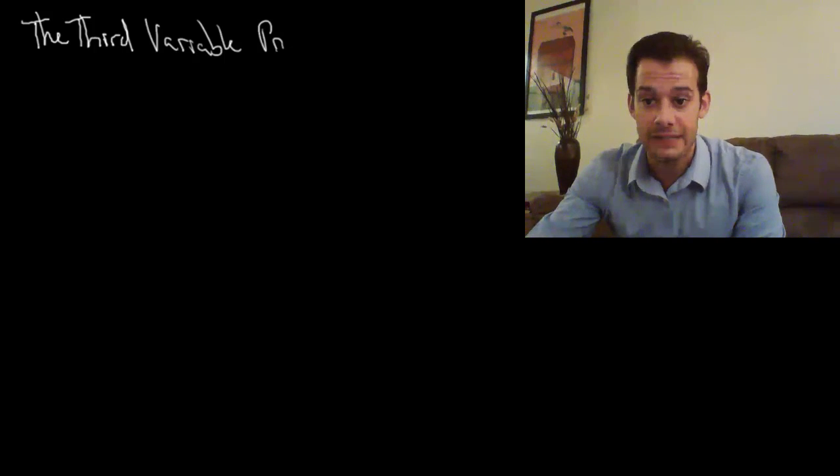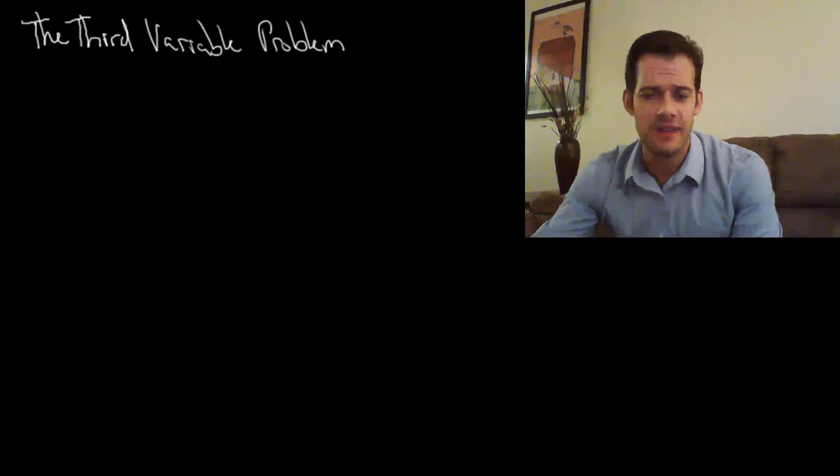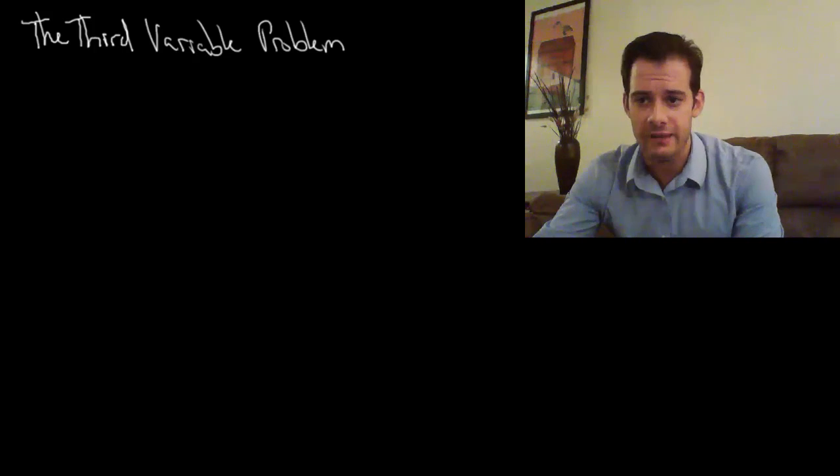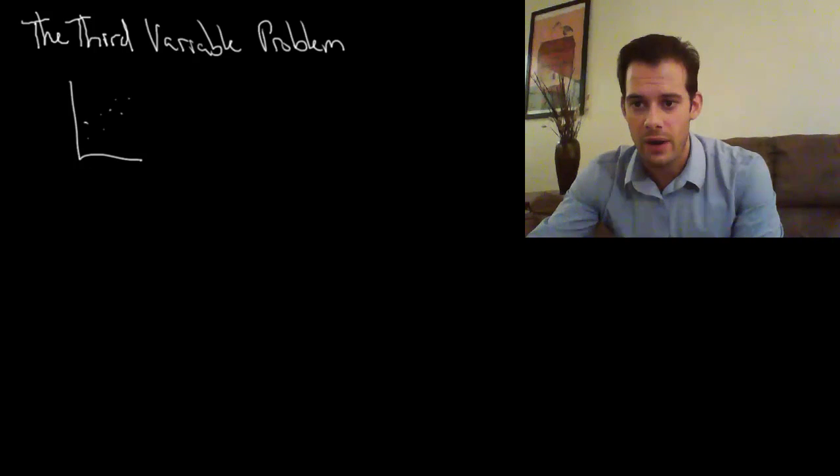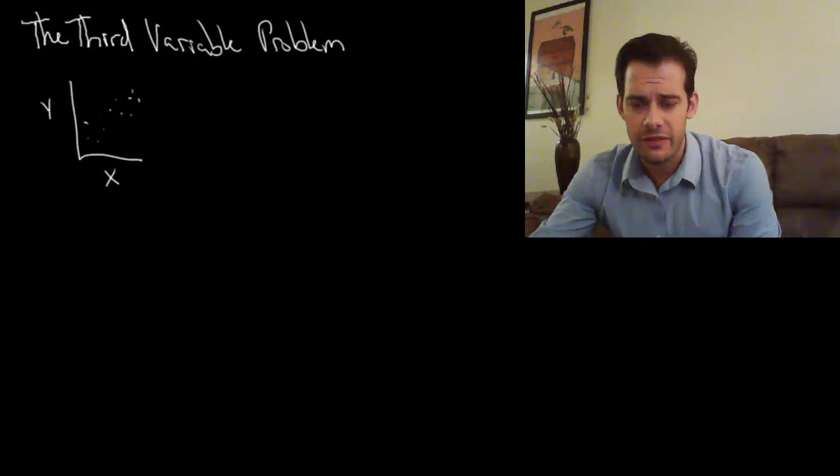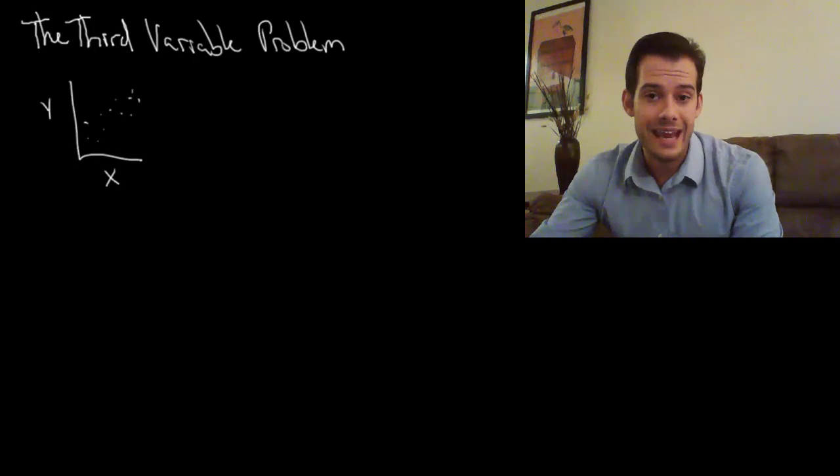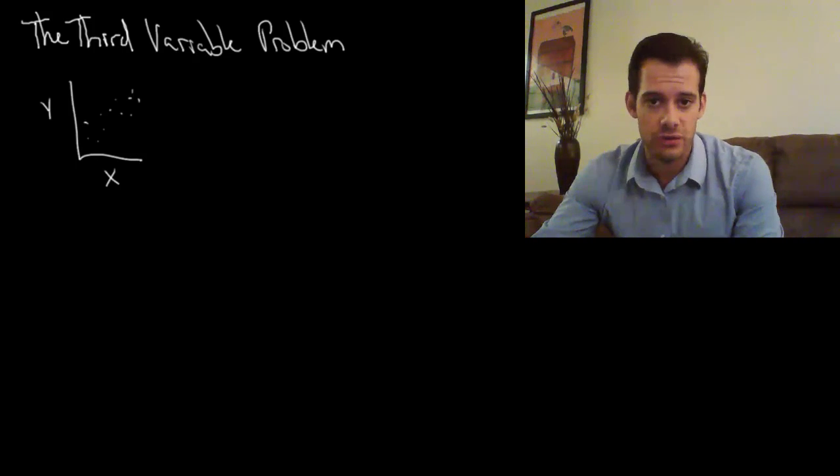This is something I mentioned in the last video on correlations. The third variable problem is this idea that when we do a correlational study, we go out and measure two variables, x and y, and we collect this and we see that there's a pattern. The problem is that we can't conclude anything about the causation. We don't know which direction causation is happening.